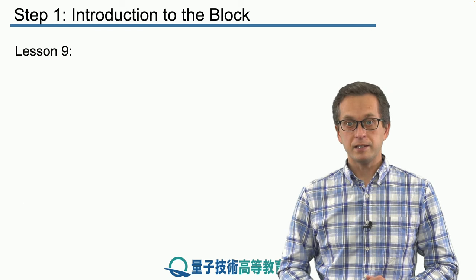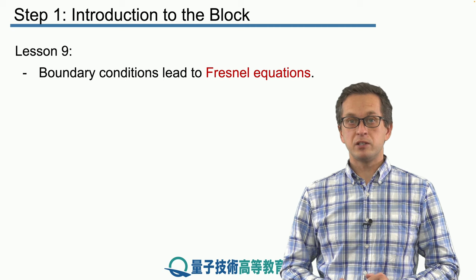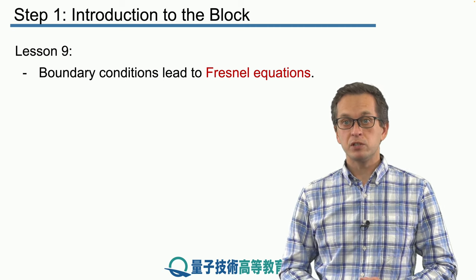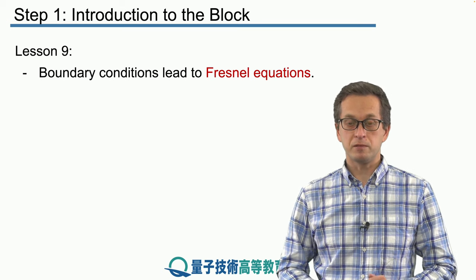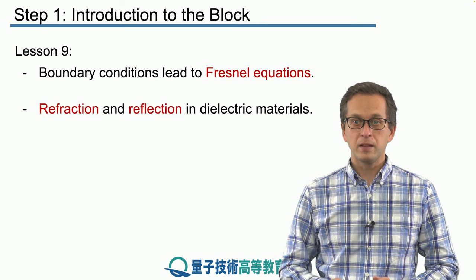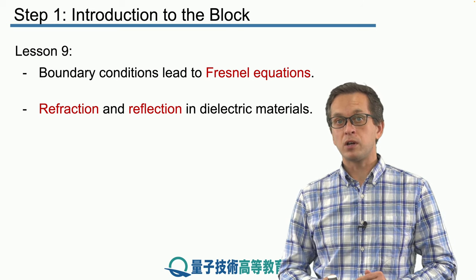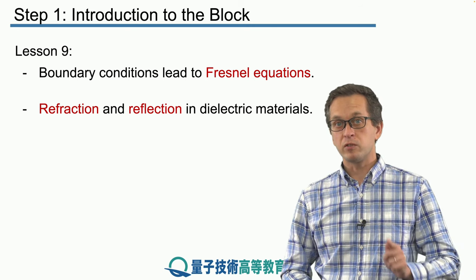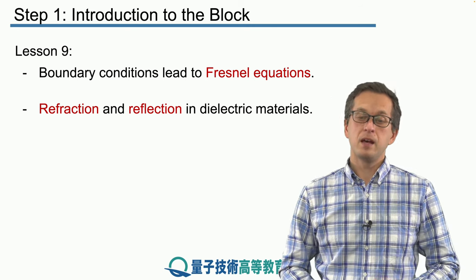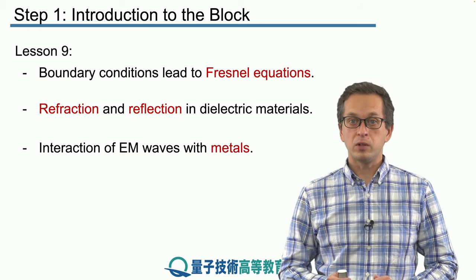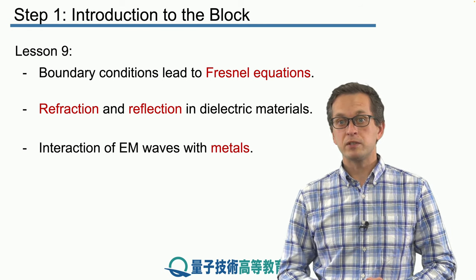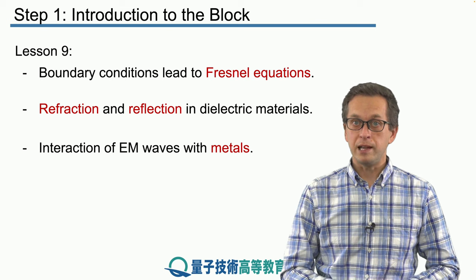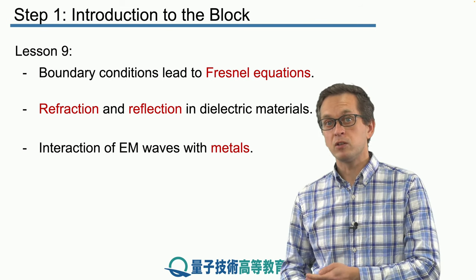In the next lesson, lesson 9, we will continue with our discussion of EM waves in dielectrics, and we will use the boundary conditions to derive what are known as Fresnel equations. This will allow us to finally calculate the refraction, reflection, and transmission coefficients when light travels from one dielectric medium into another. In the latter part of lesson 9, we will consider how electromagnetic waves interact with metals, and we will see that there is a very big difference between how light behaves when incident on a dielectric medium versus a metal medium.